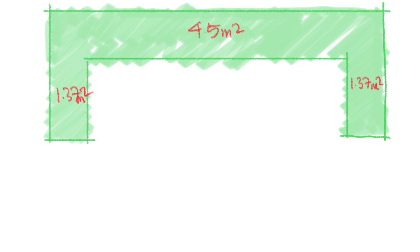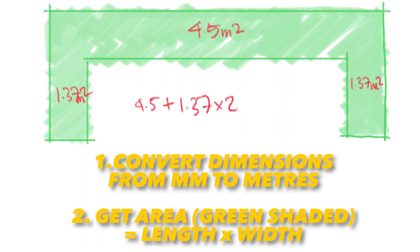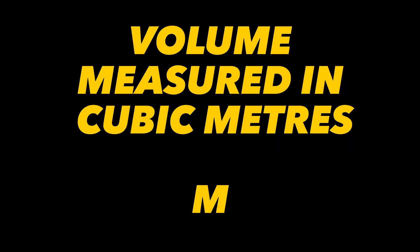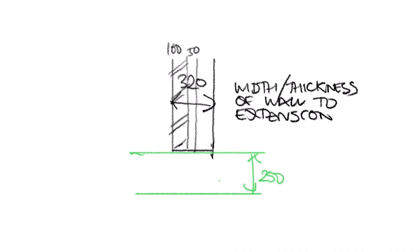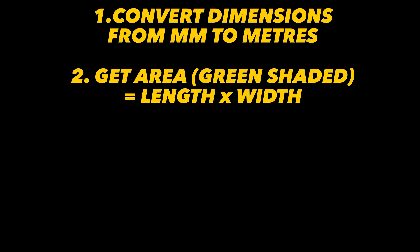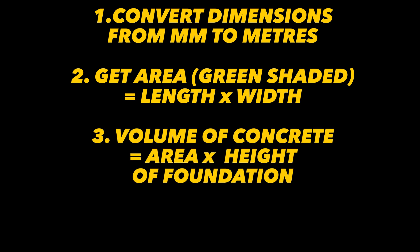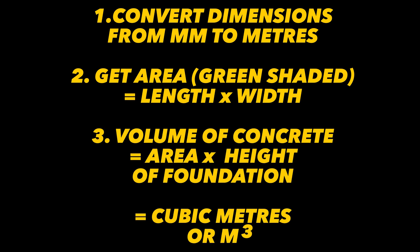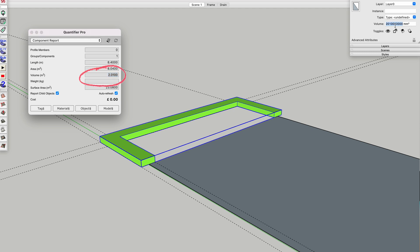If I haven't modeled it in 3D, I'll just use the 2D drawings or sketches we did earlier. Take the plan area of the concrete — shown here in green — and multiply by the depth to get the overall volume, measured in cubic meters. We said the depth was likely to be 250 millimeters or 0.25 meters, so we can work out our concrete volume using the formula: length × width × height.